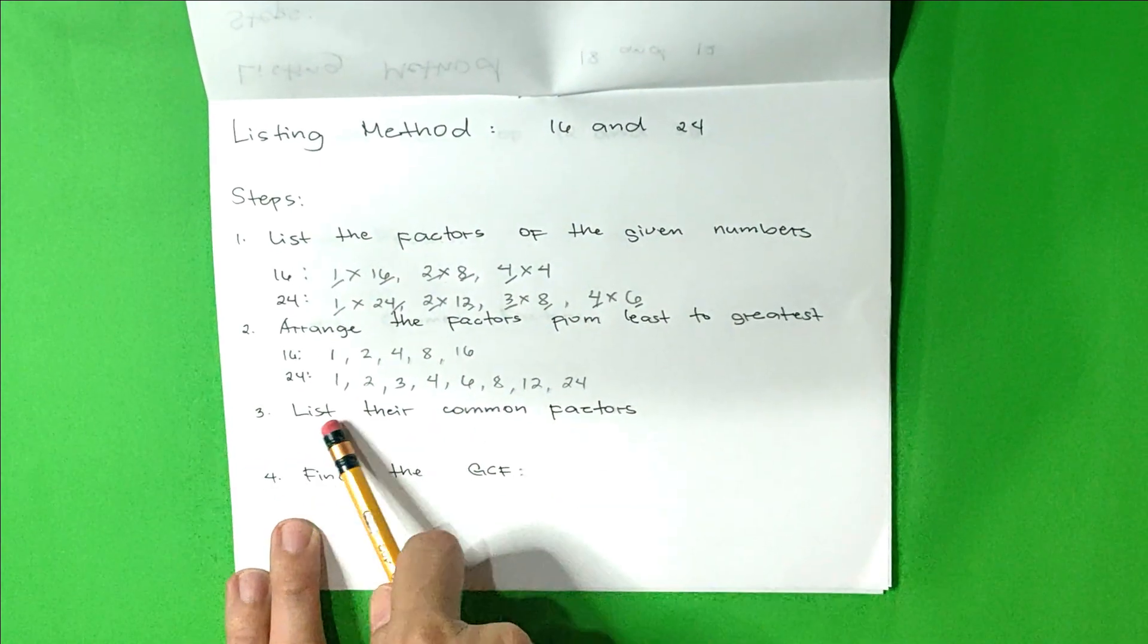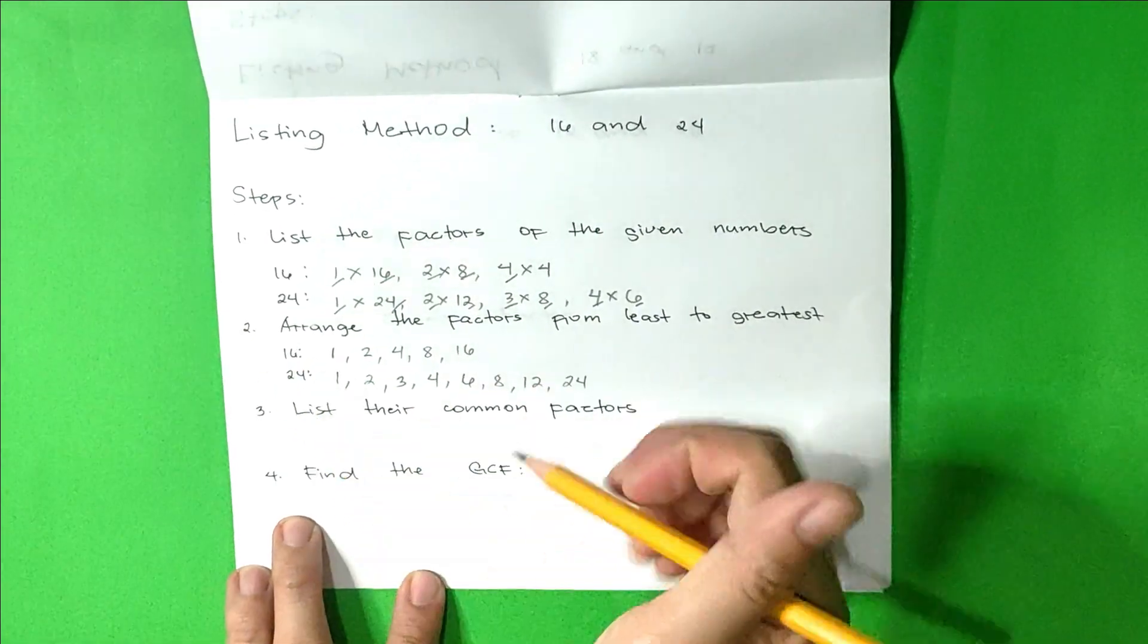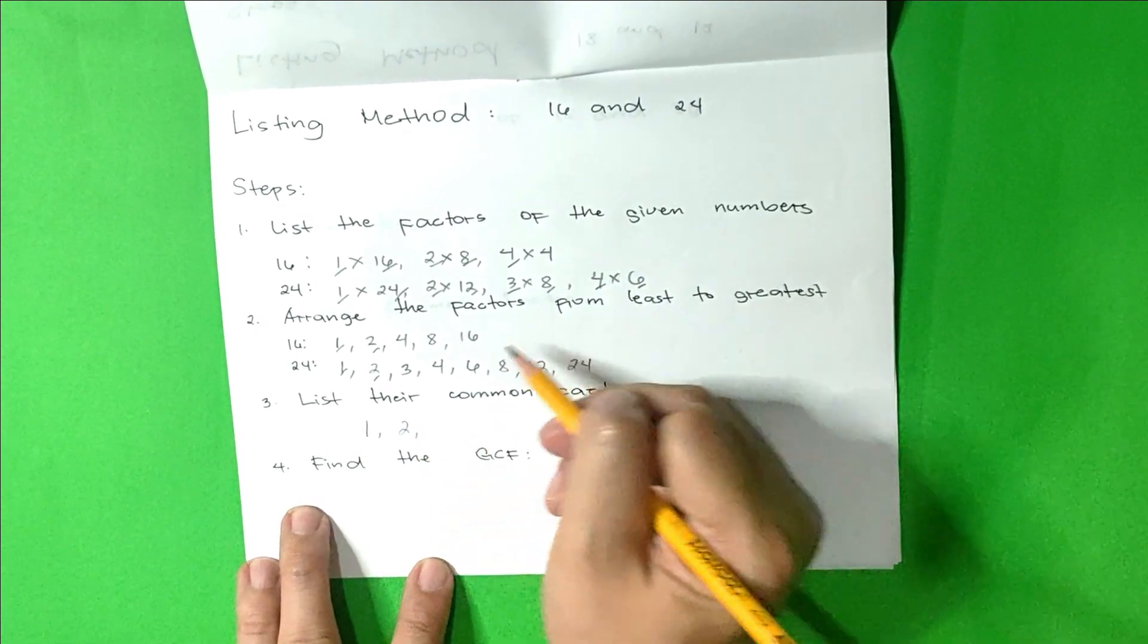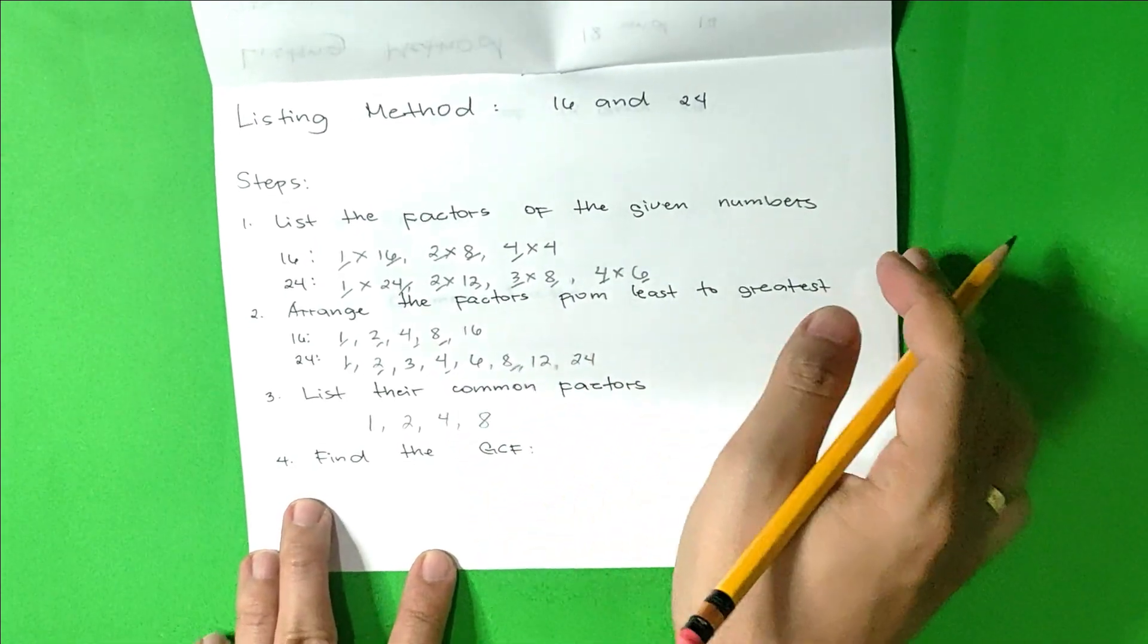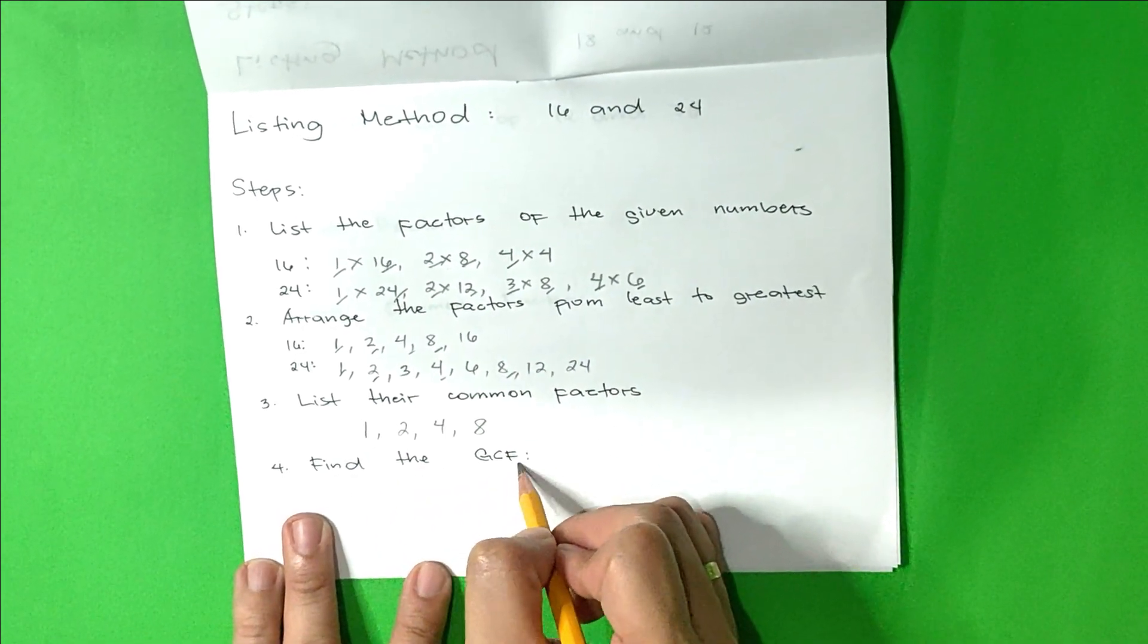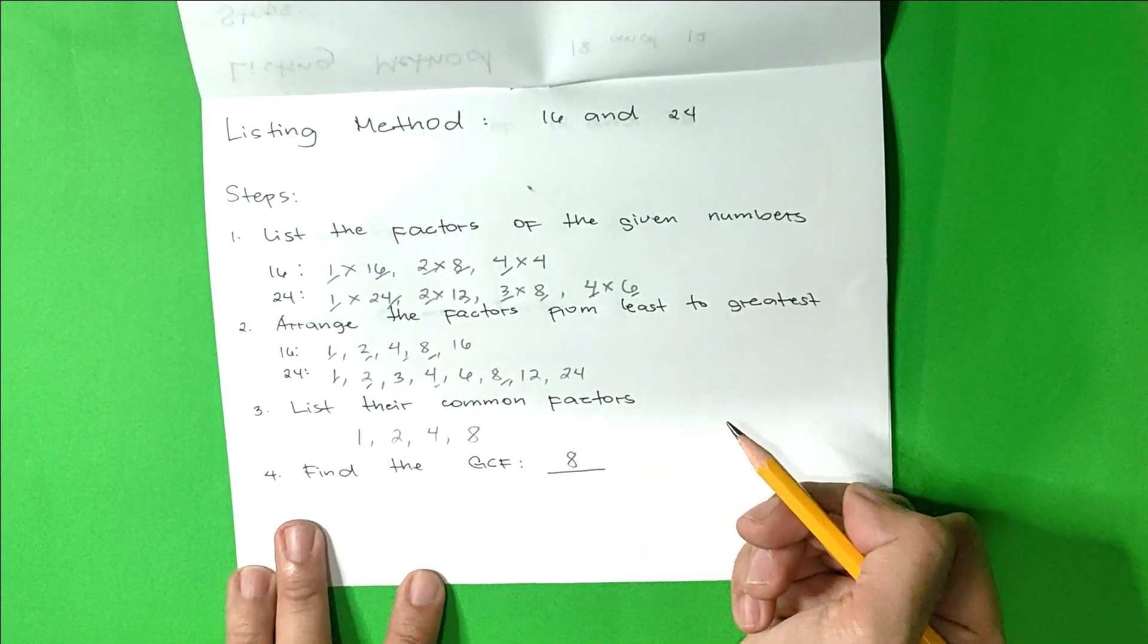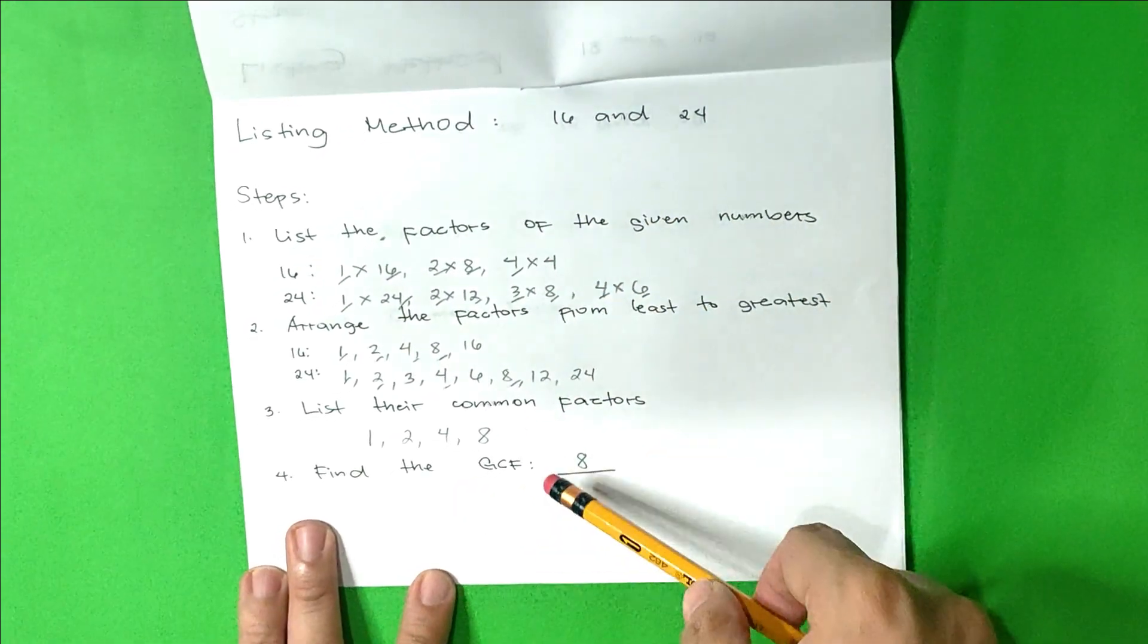The third step is list their common factors. The common factors of 16 and 24 are 1, 2, 4, and 8. So among the common factors, what is our greatest common factor? You get it right, it's number 8. So the greatest common factor of 16 and 24 is 8.